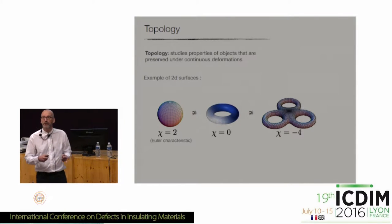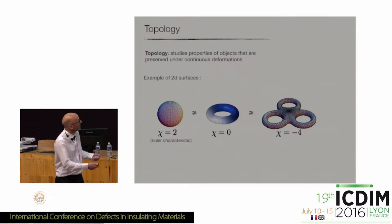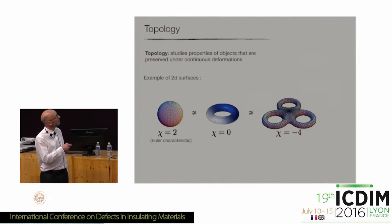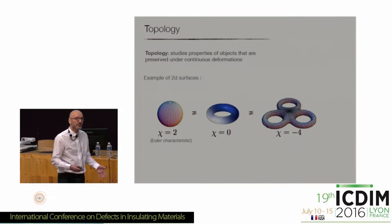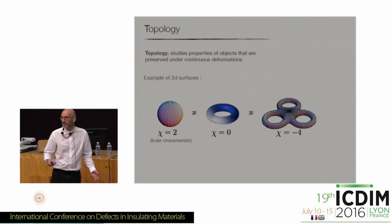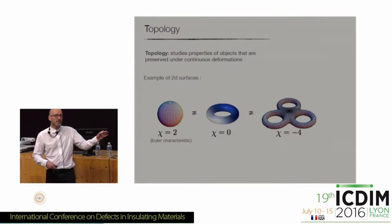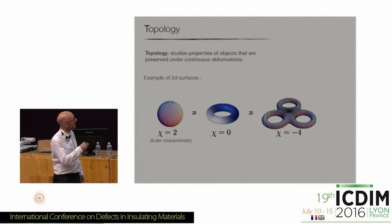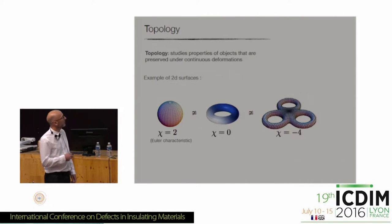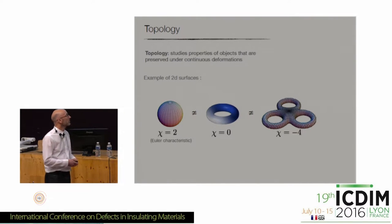However hard you try, you can never deform a sphere into a torus — a donut. They have different intrinsic properties; mathematicians say they have different topology. Objects that can be deformed one into the other have the same topology; when you cannot do so, they have different topology. This gives a classification of surfaces. You need a number to tell you which class a given surface belongs to — historically called the Euler characteristic, which basically counts the number of holes in the surface.